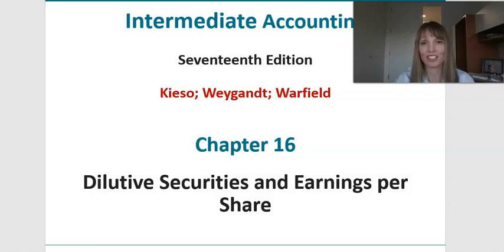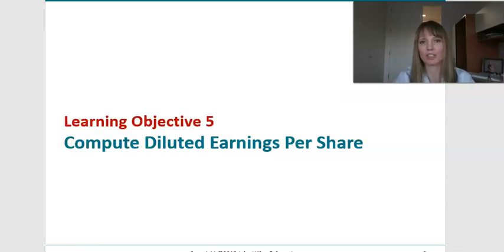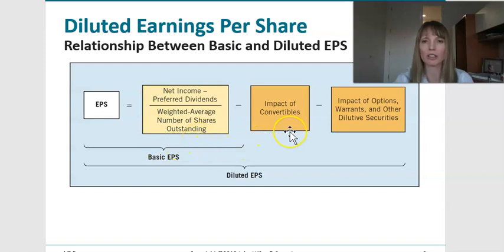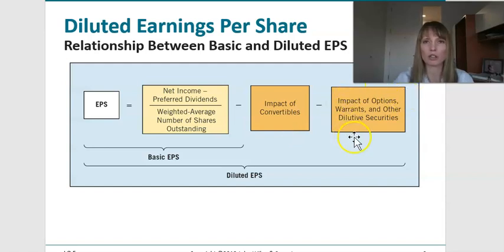Welcome back to Intermediate Accounting. This video concludes our discussion of Chapter 16, Dilutive Securities and Earnings Per Share, and focuses on diluted earnings per share. Diluted earnings per share begins with basic earnings per share, then adjusts for the impact of convertible debt, convertible preferred stock, and employee stock options.